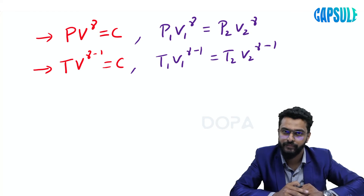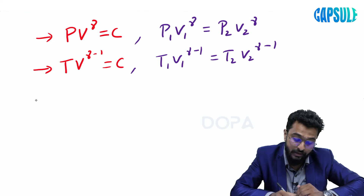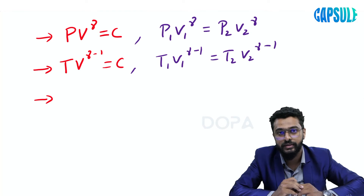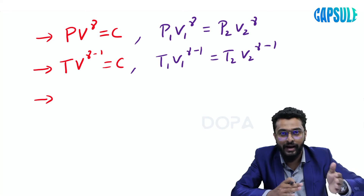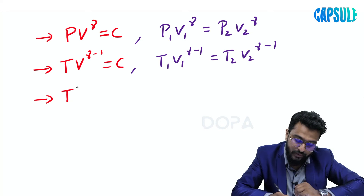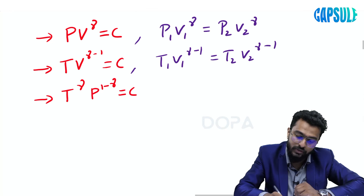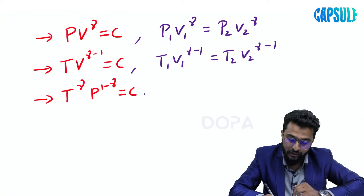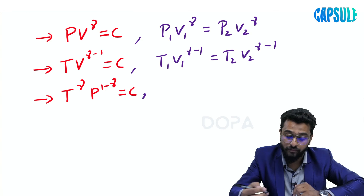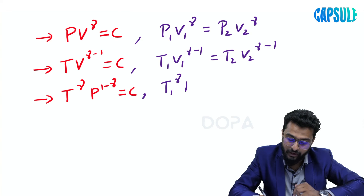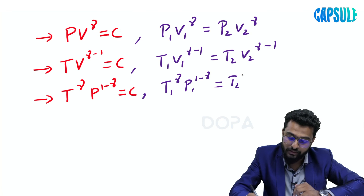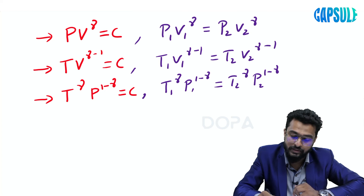The last important equation is the relation between temperature and pressure: T raised to gamma into P raised to 1 minus gamma equals constant. For solving problems, this becomes T1 raised to gamma into P1 raised to 1 minus gamma equals T2 raised to gamma into P2 raised to 1 minus gamma.